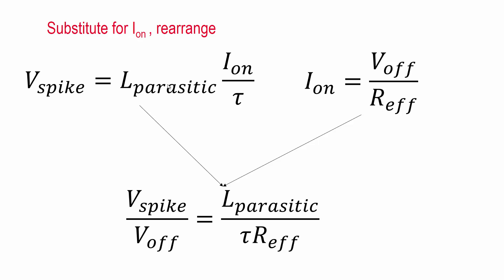So the next step is to take our inductor equation and substitute for I_on and rearrange. And we get this formula V_spike over V_off is L_parasitic divided by τ and the R_effective.